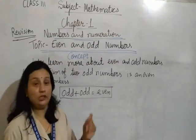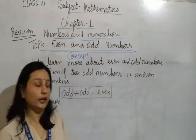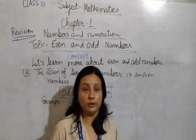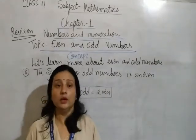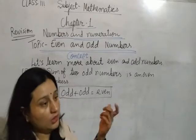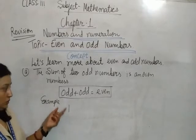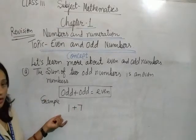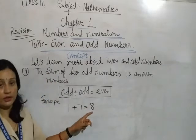Now let's learn some properties of even and odd numbers. First point: the sum of 2 odd numbers is an even number. It means if you add any 2 odd numbers, the answer is always an even number. For example, 1 is an odd number, 7 is an odd number. 1 plus 7 equals 8. So 8 is an even number.